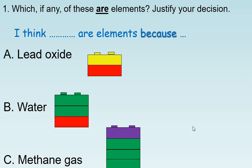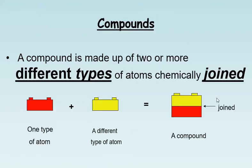Compounds: a compound is made up of two or more different types of atoms, and they have to be chemically joined. So here we have one type of atom, and here's a different type, and we've chemically joined them together.